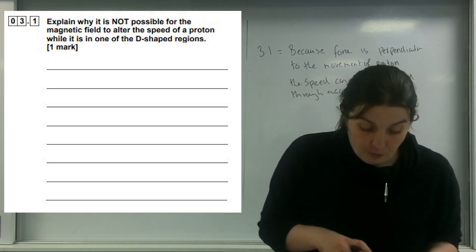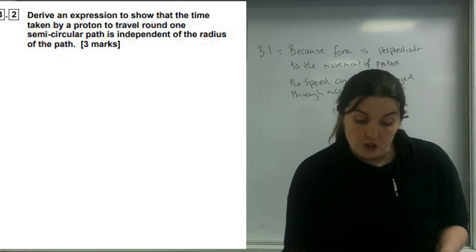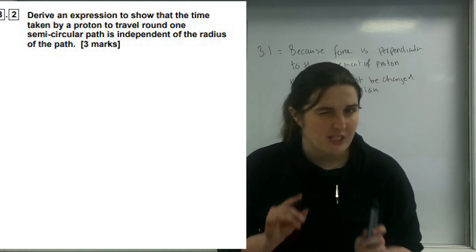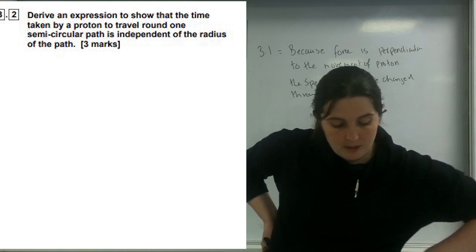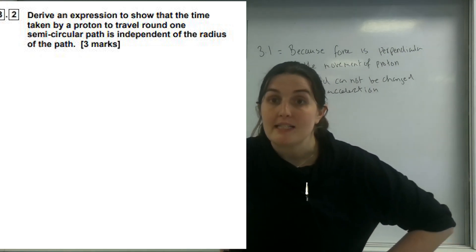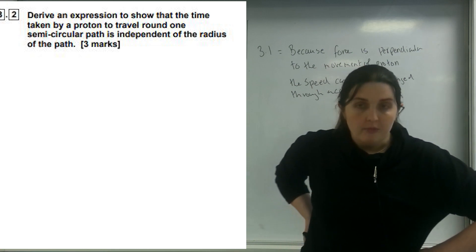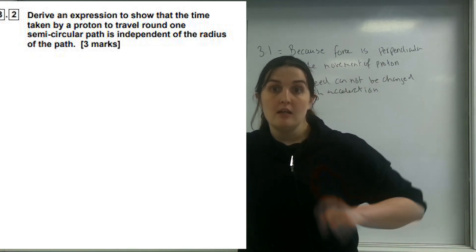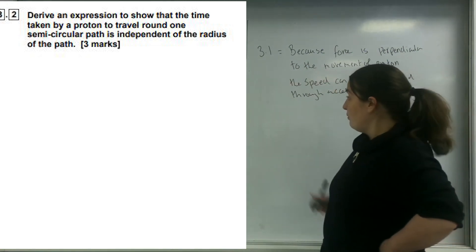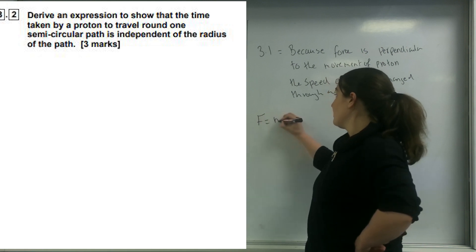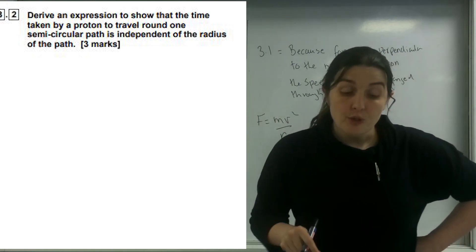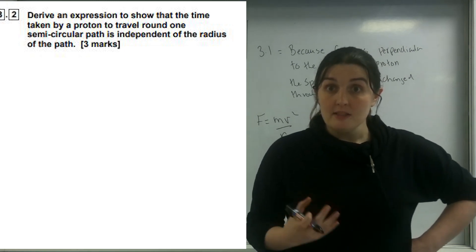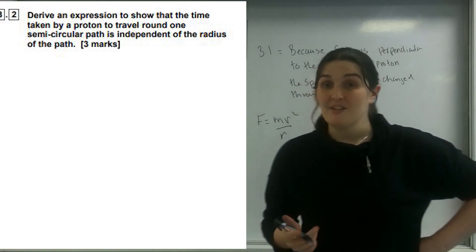Which brings me to question 3.2. Derive an expression to show that the time taken by a proton to travel around one semicircular path is independent of the radius. I know it's moving in a circle, so I'm going to use the circular motion force, mv squared over r. I also know it is being affected by a magnetic field.